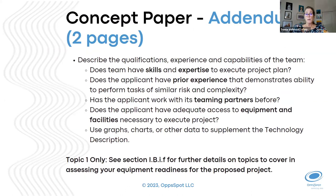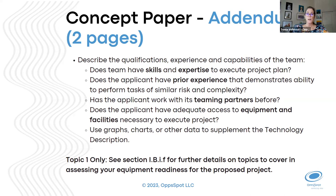The final component, except for topic one which also needs data sharing, is an addendum of up to two pages. Here you get to highlight your qualifications, experience, and team capabilities: whether you have the skills and expertise to execute the project, prior experience, who you're teaming with, where you'll do the work, what equipment and facilities you have or need, and any charts or graphs that supplement and explain your technology. Topic one has additional specific requirements for the addendum.